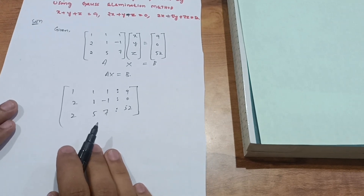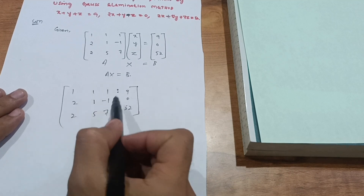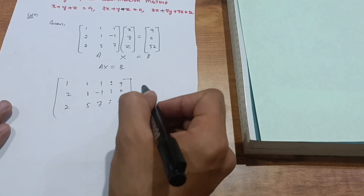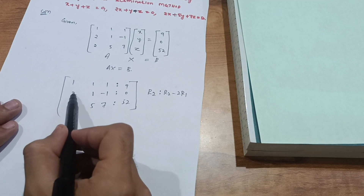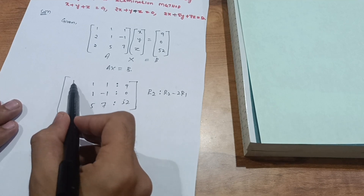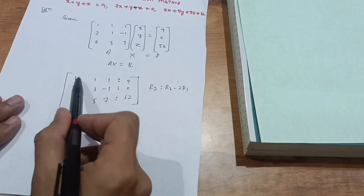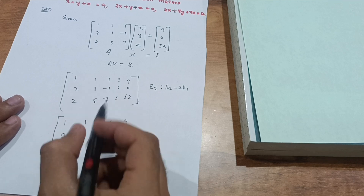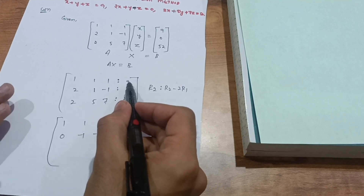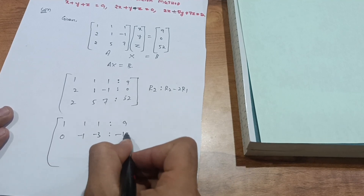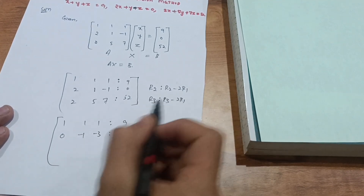Now I apply row transformations, similar to those used in finding the rank of a matrix. Applying R2 → R2 minus 2 times R1: row 2 becomes [2 minus 2, 1 minus 2, minus 1 minus 2 | 0 minus 18] which gives [0, minus 1, minus 3 | minus 18].